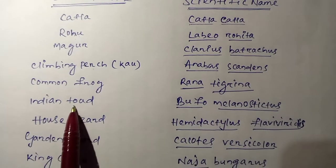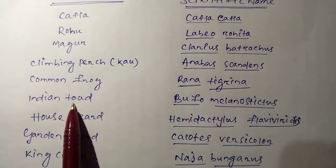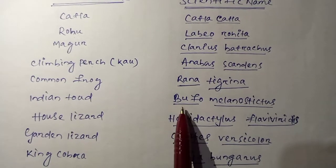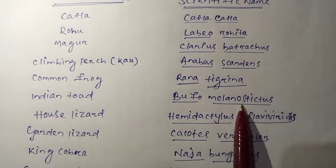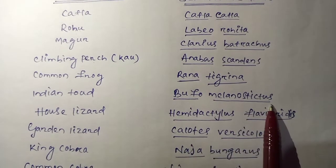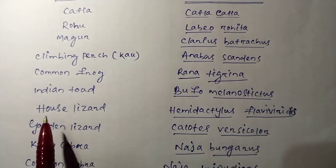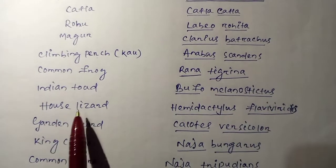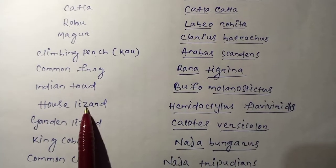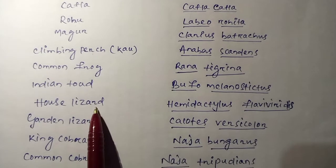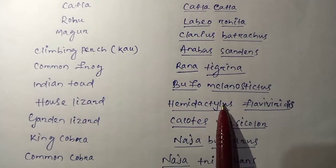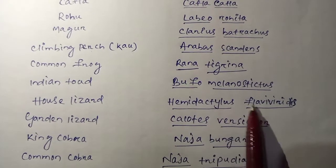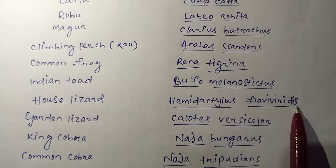Next is Indian Toad. The zoological name is Bufo melanostictus. Next is House Lizard. The scientific name is Hemidactylus flaviviridis.